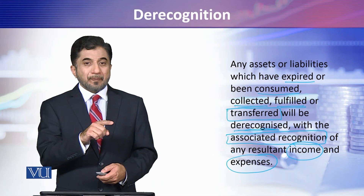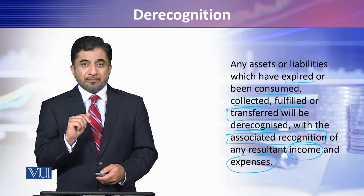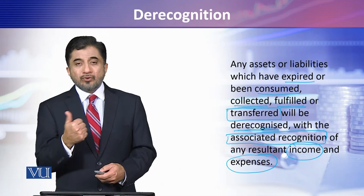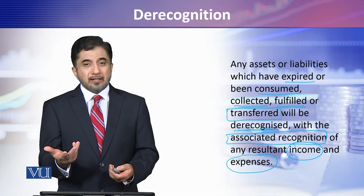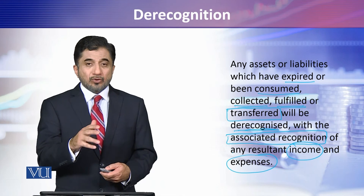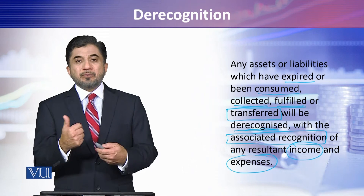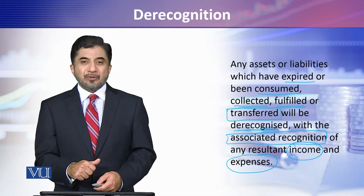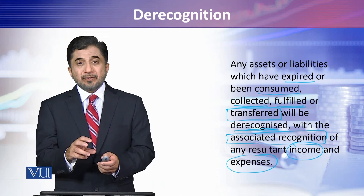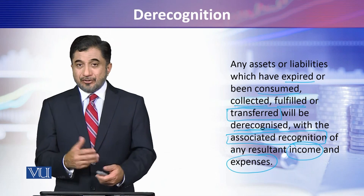When a liability is de-recognized, the liability is debited and finished. Against it, there will be an outflow of economic resources — for example, a cash payment, so cash is credited. In another case, when a liability is de-recognized due to a discount received, that discount becomes income for you, and that income is recognized. So this is de-recognition of assets and liabilities that results in the recognition of expenses or income.